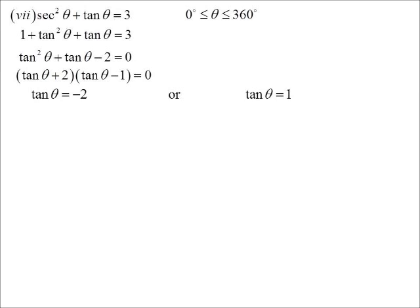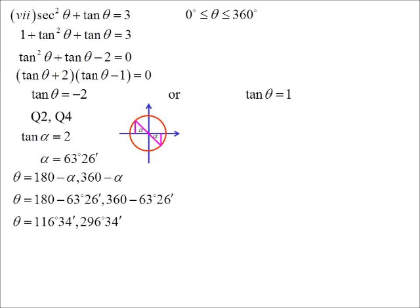So tan theta is negative 2. Second or fourth quadrants. Acute angle, 63 degrees 26. So we end up with 116 degrees 34, 296 degrees 34.